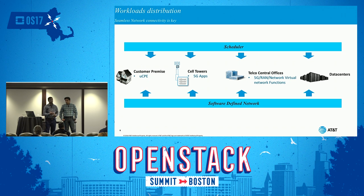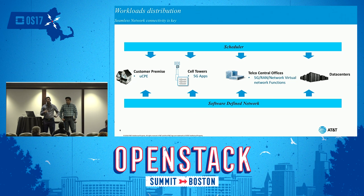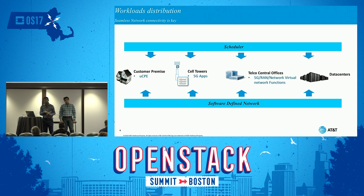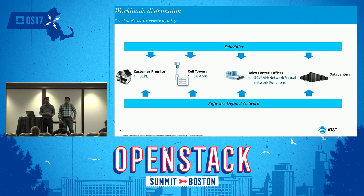When a user requests an edge workload — for example, an AR application where a person is wearing a glass device connecting via 5G or 4G — there needs to be quick video processing done very close to the edge. In this case, the edge could be a cell tower or a central office. We have connectivity from the cell phone to the cell tower, then from the cell tower to the central office. But the industry needs to solve the fact that we cannot put all the workload at the edge because the edge is going to be very small.